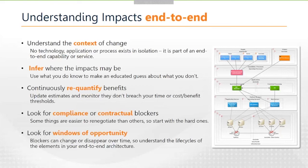Understanding those impacts is fairly key. You don't always have the data you need to track all those impacts, and that's where we use a technique we call inference — we actually use algorithms to do it, but you can do it manually. That's really about understanding how to infer what you don't know. For example, if we have a sales application and we don't know whether it talks to our billing application, but we do know the sales process uses it and talks to the billing process, we can start to infer what some of the integrations or dependencies might be even when the data is missing.